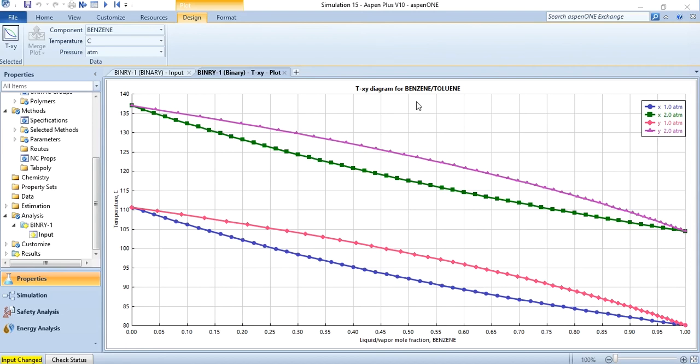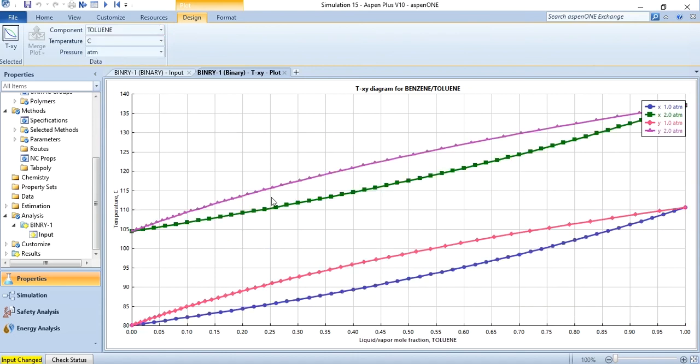Now our next task is to develop the PXY diagram for benzene-toluene mixture. So what we will do, we will go back but before going back let me show you that for this component we have selected benzene. Temperature is selected at degree centigrade. Pressure is selected at atm. If I change it from here from benzene to toluene then you see the curves are just shifted to adjust accordingly to the toluene, but the regions are still same.